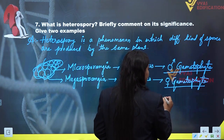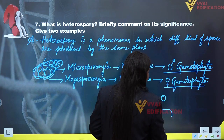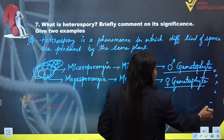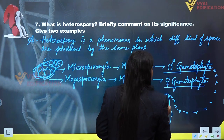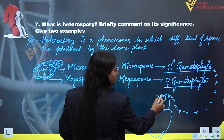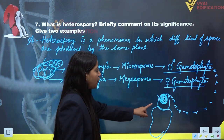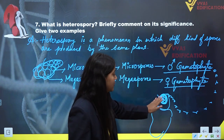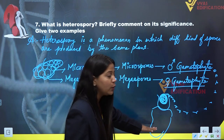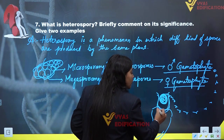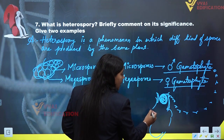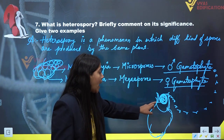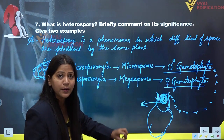After gamete formation, the female gametophyte bearing archegonium contains the egg cell, and the male gametes come towards the egg cell and fertilize with it, forming a zygote. This zygote and the surrounding structure are retained on the gametophytic plant body only. This retention ensures the proper development of the zygote, which is important for the evolution of the seed.